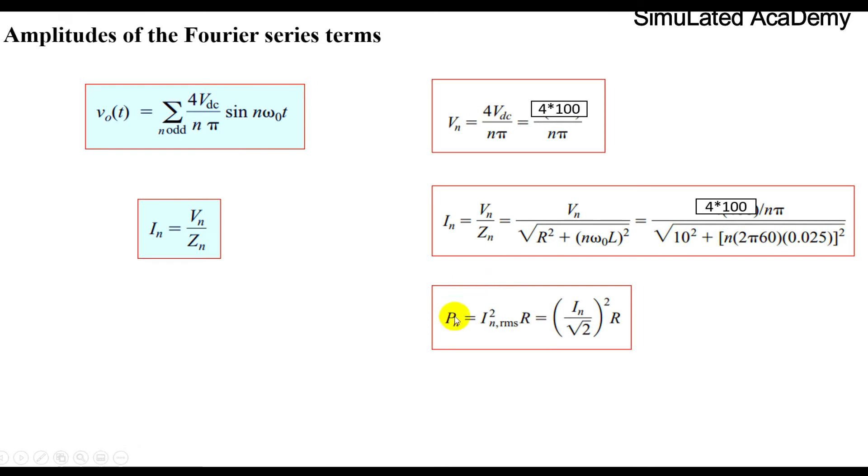The third point is power. The power of n term is equal to irms square into R where irms is equal to in divided by square root 2 and take the square of this into R.